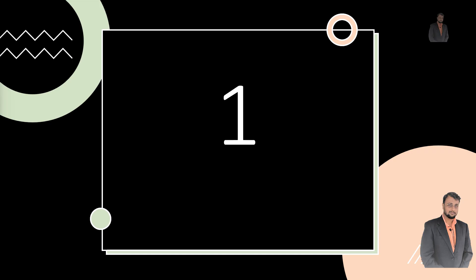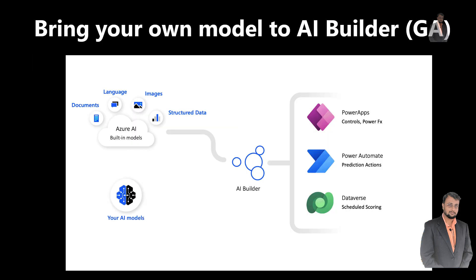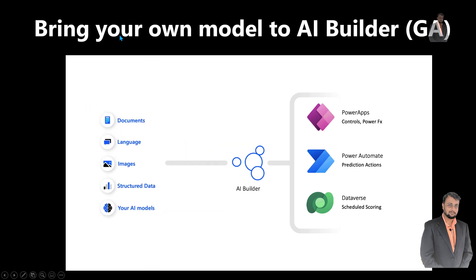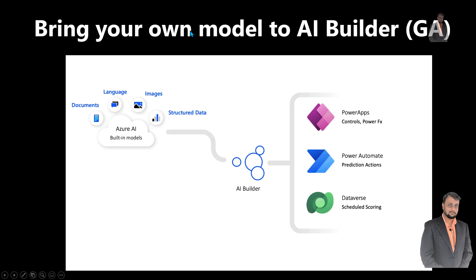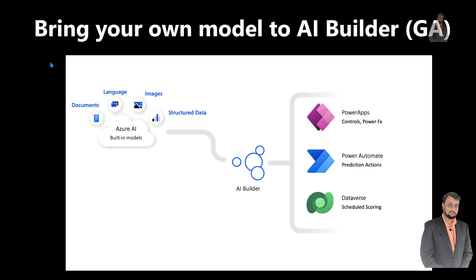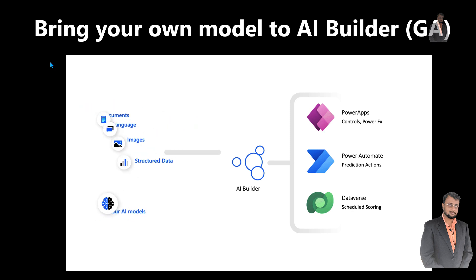The first important announcement at Ignite in Power Automate is around AI Builder. Now you can bring your own model to the AI Builder — this feature is called BYOM for short. Earlier, we had a limited set of AI models available in AI Builder, and all those models were out-of-the-box models provided by Microsoft.